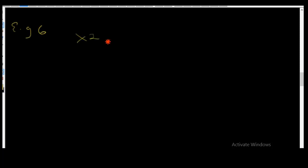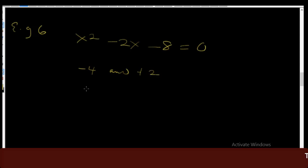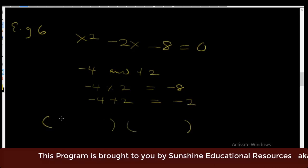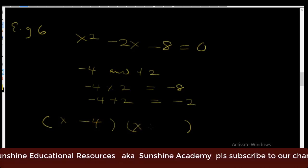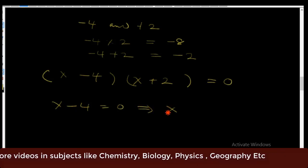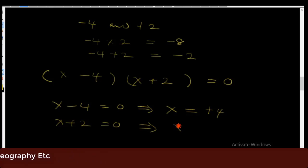Example 6: x² - 2x - 8 = 0. The coefficient of x² is 1, so the general rule applies. We look for two numbers whose product is -8 and whose sum is -2. Those numbers are -4 and +2. Verify: -4 times 2 = -8, and -4 + 2 = -2. Creating the brackets: (x - 4)(x + 2) = 0. So x - 4 = 0, therefore x = +4. And x + 2 = 0, therefore x = -2.